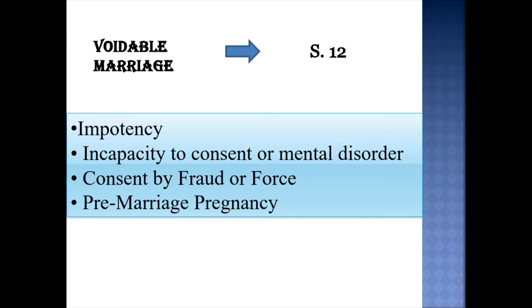The decree is given retrospective effect from the date of the marriage. Hence if a marriage becomes voidable and one person claims in court to declare it void, then it will become void ab initio. If neither party goes to court to avoid the marriage, then it will be a perfectly valid marriage. Voidable marriages are described in Section 12 of the Hindu Marriage Act.